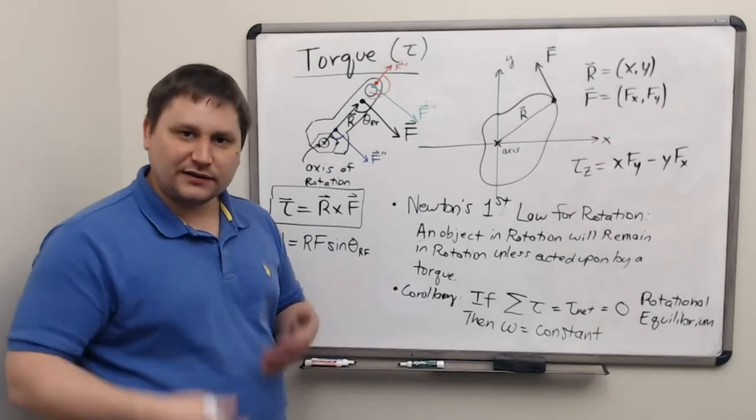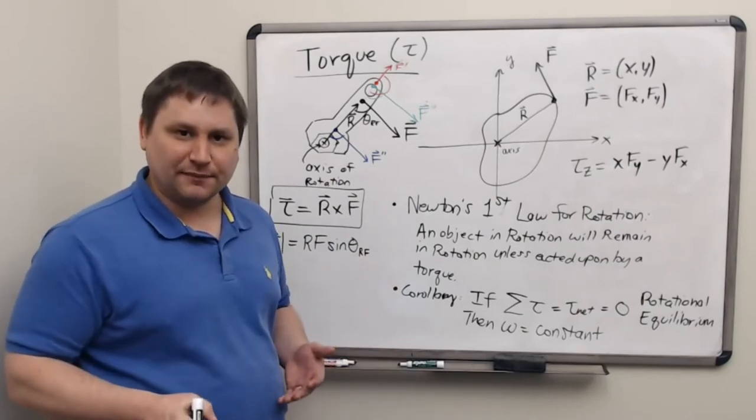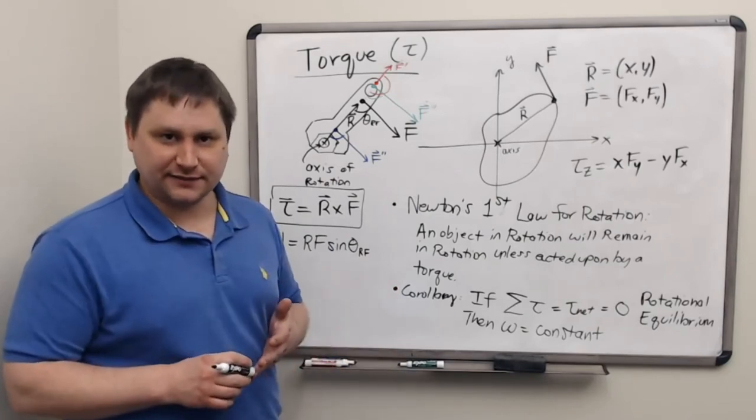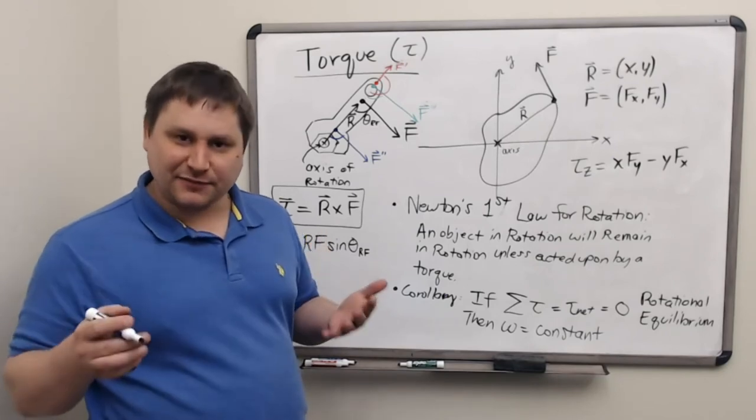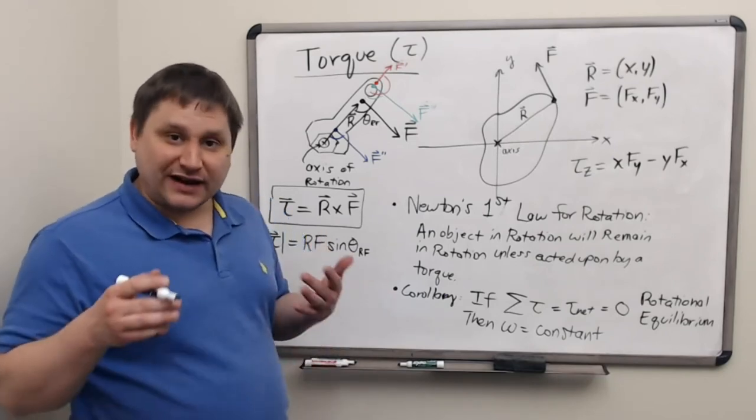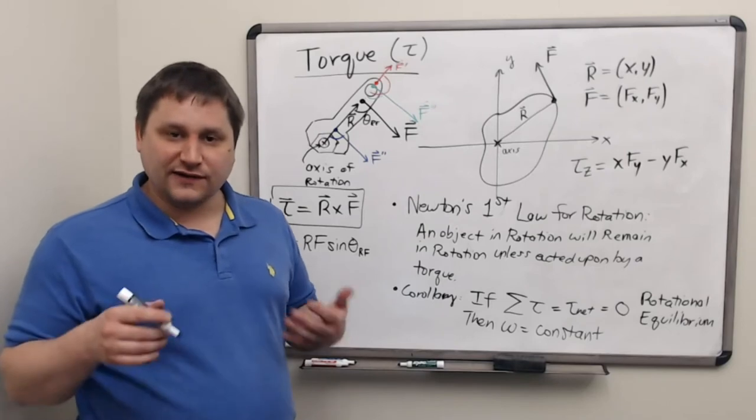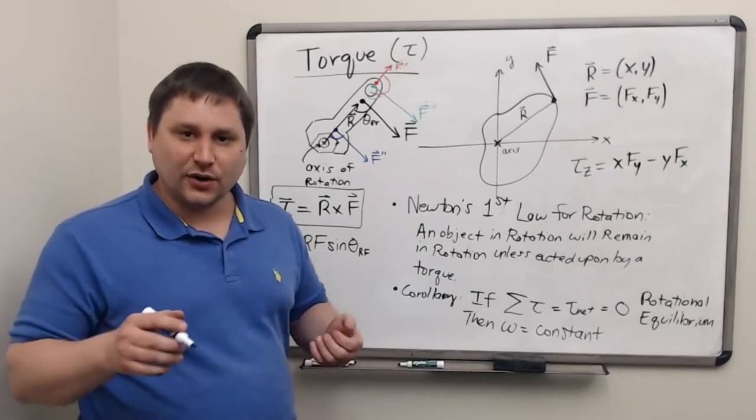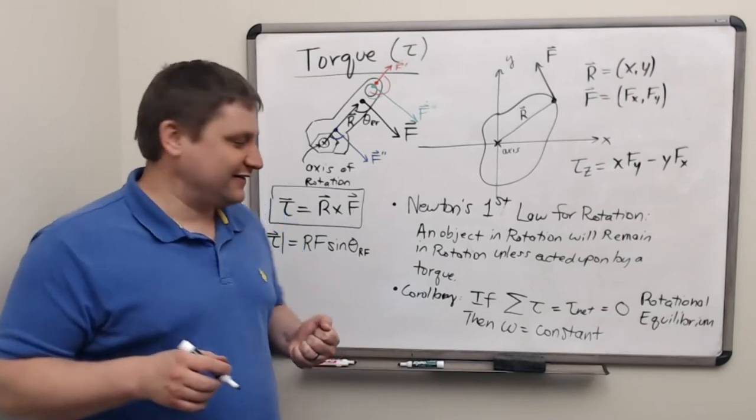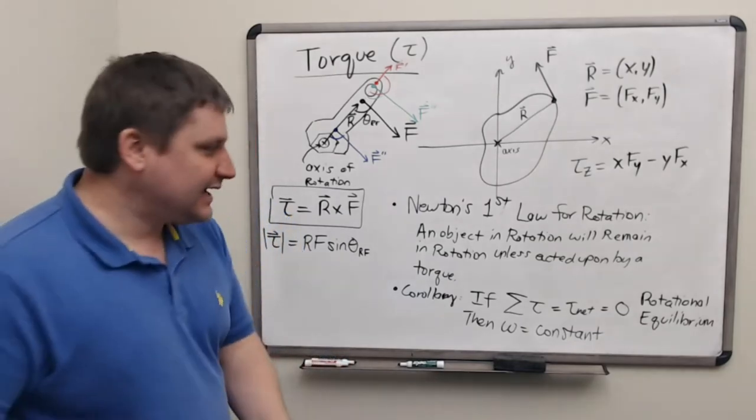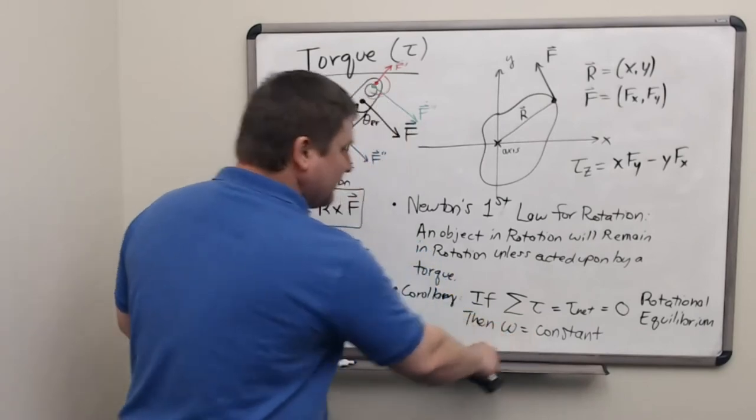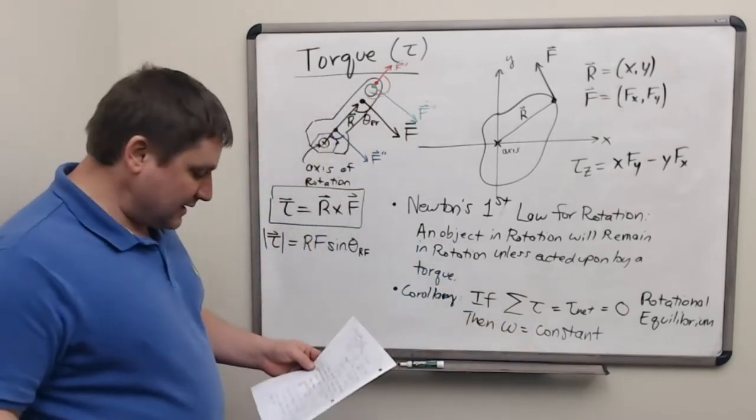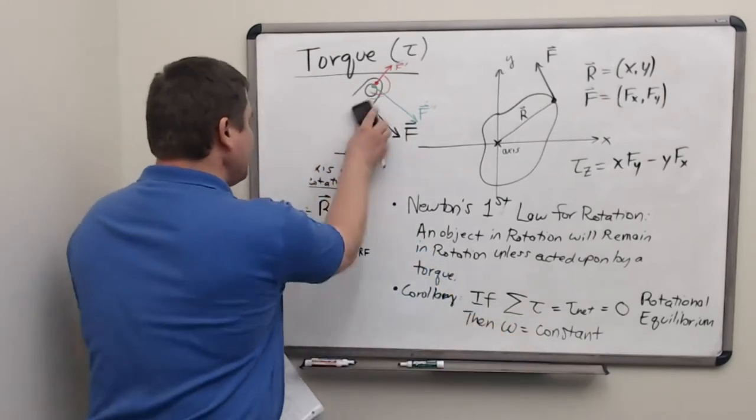So if there's no net torque, the object is in rotational equilibrium, doesn't change its angular velocity. This matches up directly with our concept of translational equilibrium, where a zero net force resulted in no acceleration or no change in linear velocity.